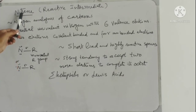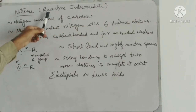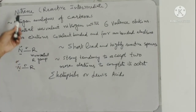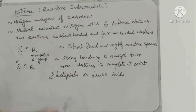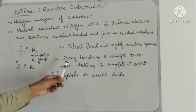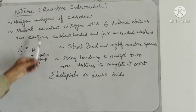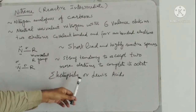Nitrenes come under the heading of reactive intermediates. Why? Because nitrenes are short-lived, highly reactive species, and they have a strong tendency to accept two more electrons to complete their octet. That is why they are short-lived and highly reactive. So we conclude that nitrenes are electrophiles or Lewis acids.